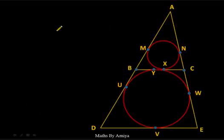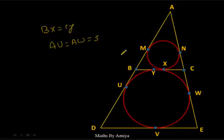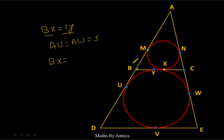Now the fifth and last concept with its proof: if we have such a figure, then BX = CY. This could appear in an examination — if BX = 2 cm, what is CY? We know AU = AW = S. BX is a tangent in the smaller circle, equal to BM, which by the first concept is S − B.